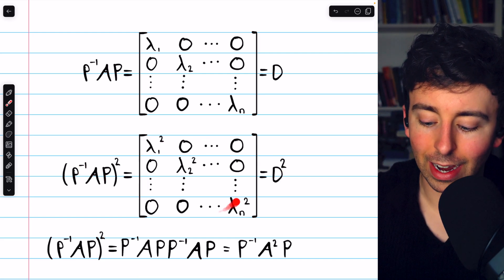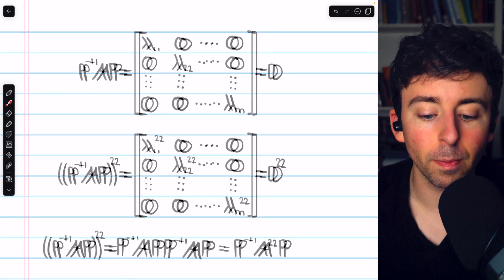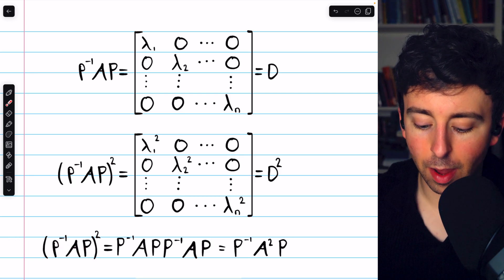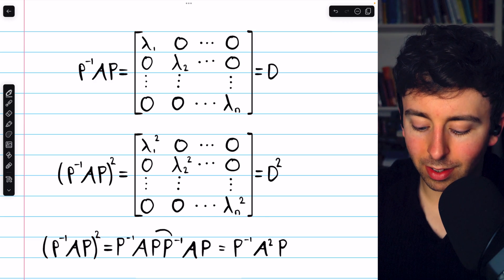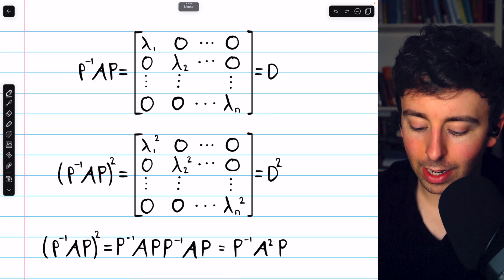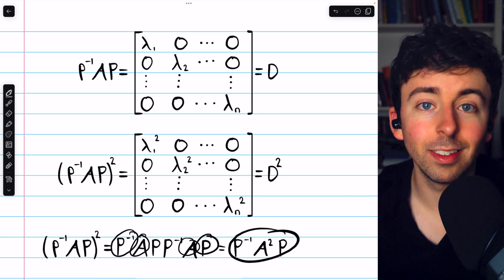Now, let's say we square everything. So we have P inverse AP squared, we have D squared, and as we know, squaring a diagonal matrix just has the effect of squaring its diagonal entries. Now, on the left, P inverse AP squared, that's the same as P inverse AP times P inverse AP. But you can see that the P and the P inverse cancel out, and would just leave behind P inverse A squared P, which we see there.